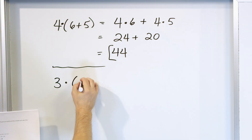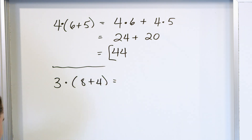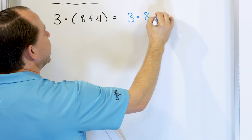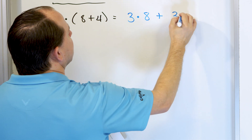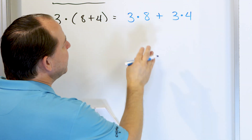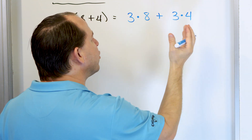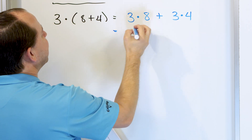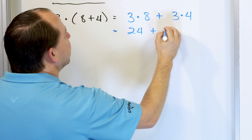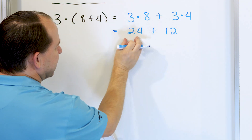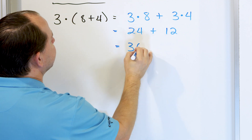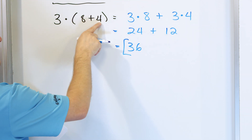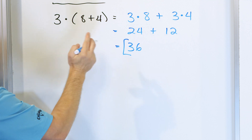What about 3 times (8 plus 4)? I distribute in: 3 times 8, plus 3 times 4. Note that we do the multiplications first because order of operations says we must multiply before we do the addition. 8 times 3 is 24, and 3 times 4 is 12. 24 plus 12 gives us 36 — that's the final answer. Checking: 8 plus 4 is 12, and 12 times 3 is 36. Correct.